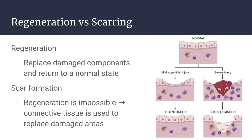Repairing tissue by regeneration requires growth of residual uninjured cells as well as maturation of tissue stem cells. Some tissues, like the epithelium of the skin or the liver, are able to replace their damaged areas and return to a normal state. But if the injured tissue is incapable of complete regeneration, or if the supporting structures of the tissue are severely damaged, repair occurs by laying down connective fibrous tissue, a process that results in scar formation.